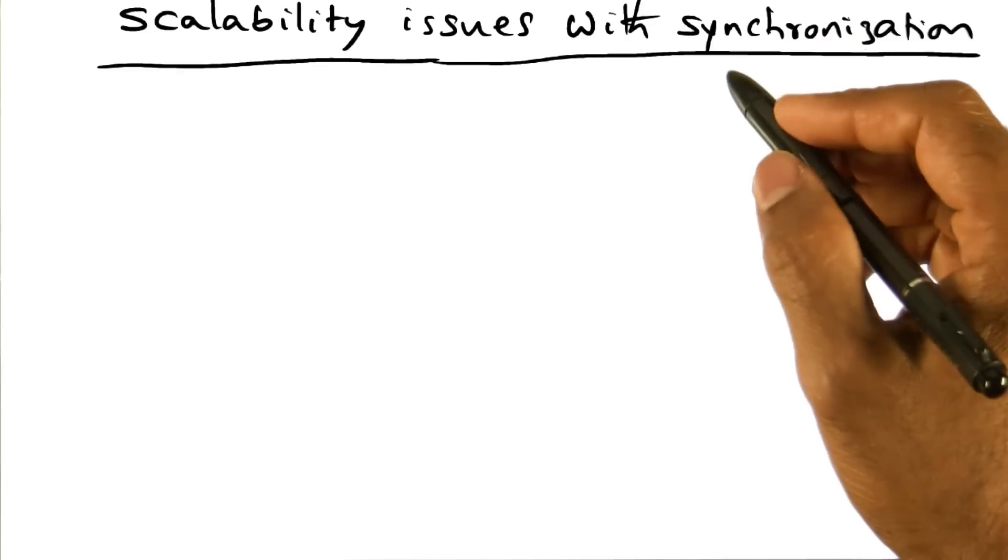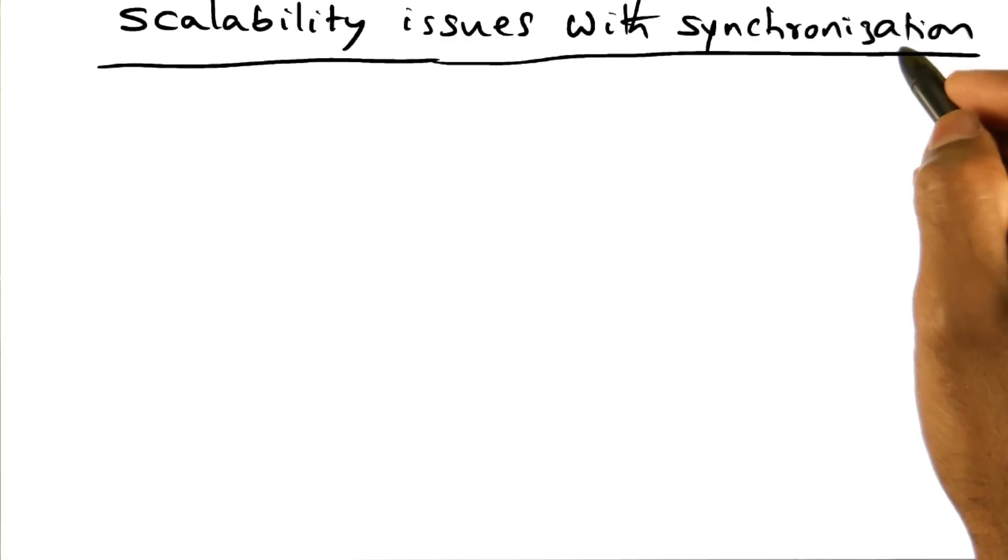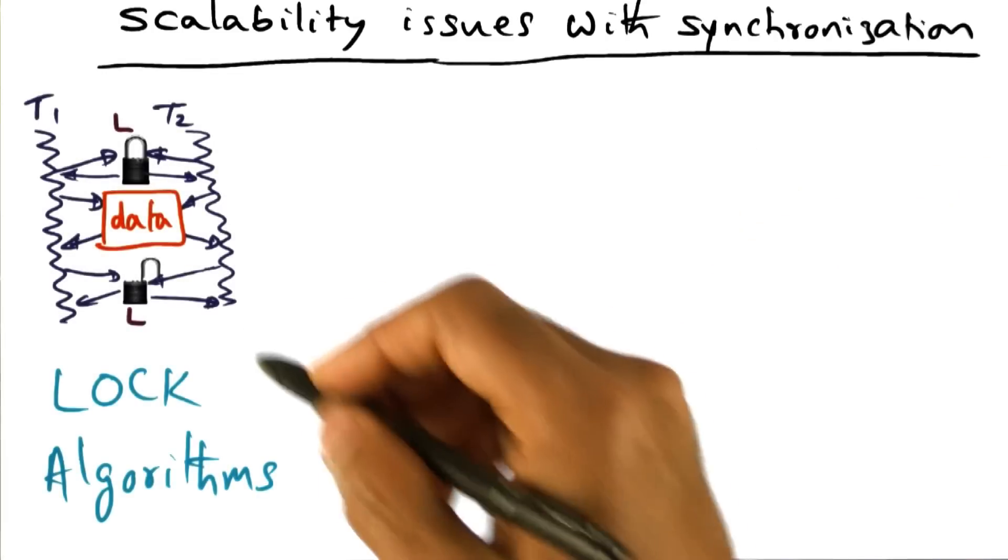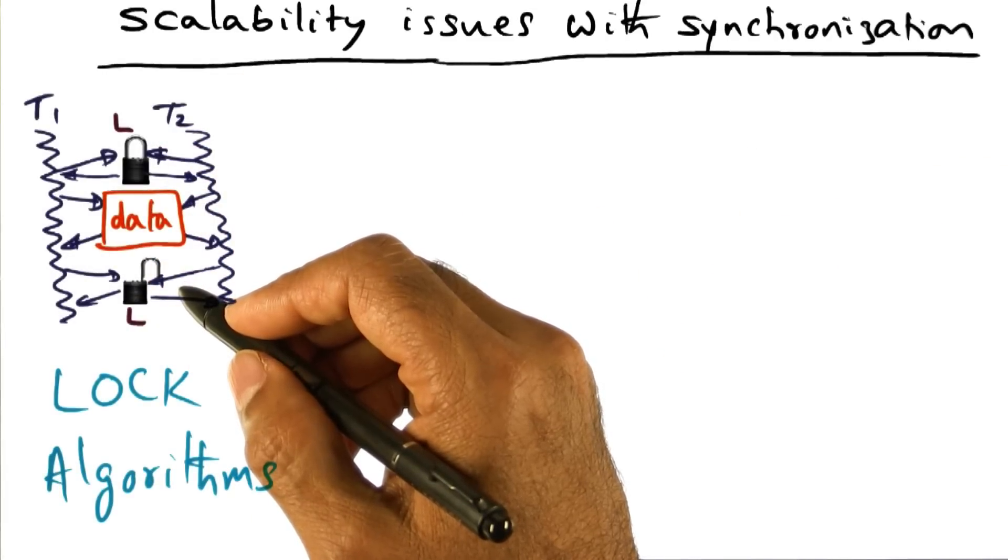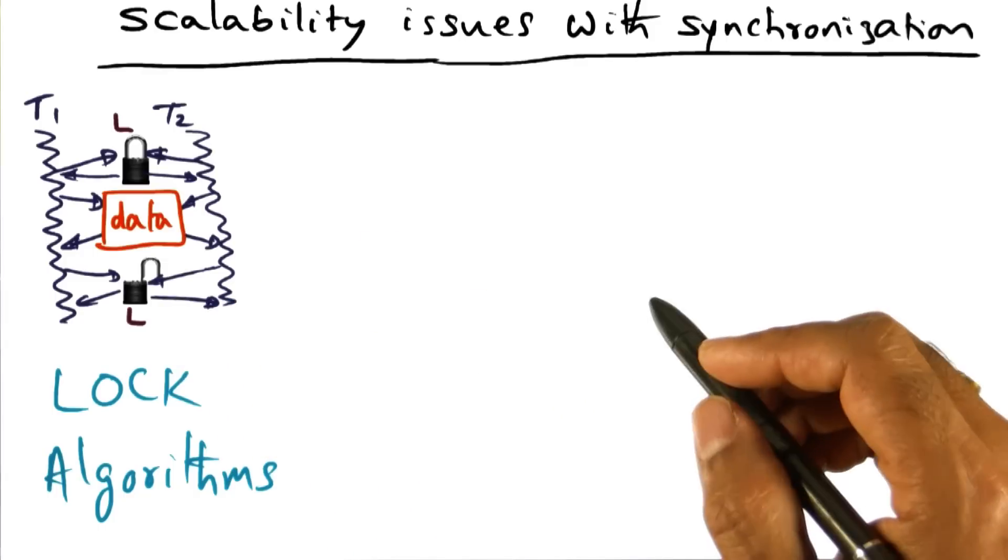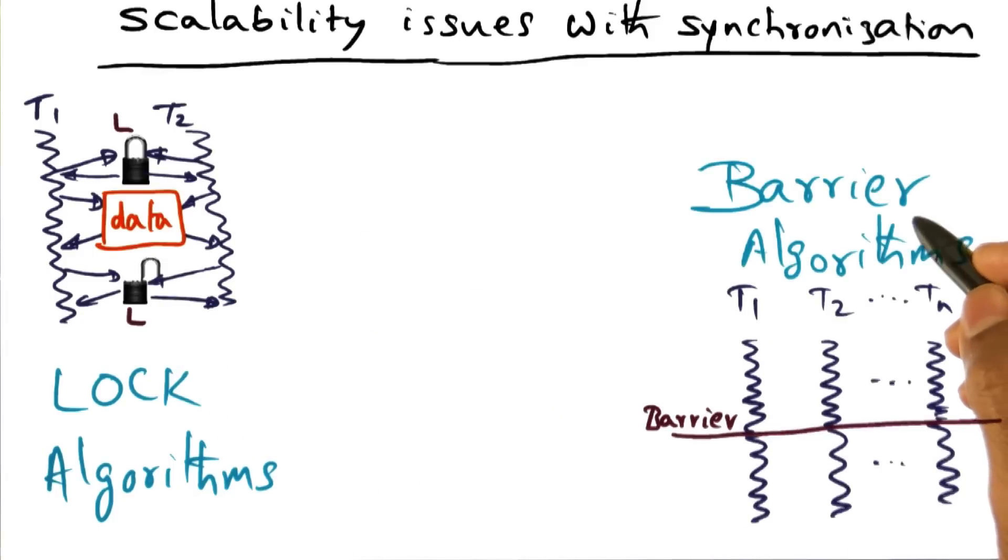Let's discuss some of the issues with scalability of synchronization primitives in a shared memory multiprocessor. We already saw that locks, both mutual exclusion as well as shared lock, is one type of synchronization operation. We also saw that barrier algorithms is another type of synchronization operation.